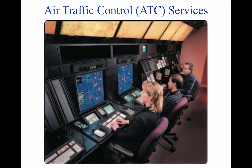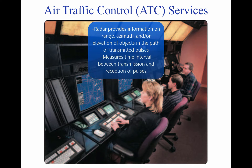Primary Radar. Radar is a device which provides information on range, azimuth, and/or elevation of objects in the path of the transmitted pulses. It measures the time interval between transmission and reception of radio pulses and correlates the angular orientation of the radiated antenna beam or beams in azimuth and/or elevation.